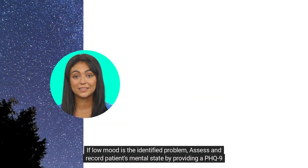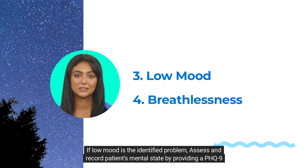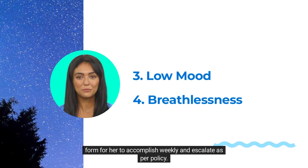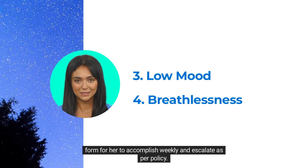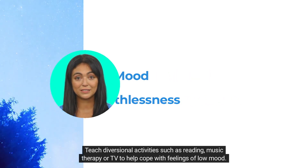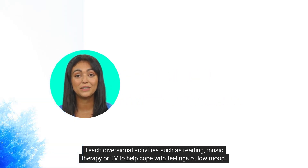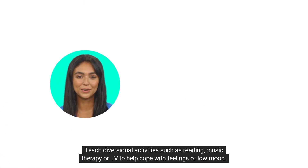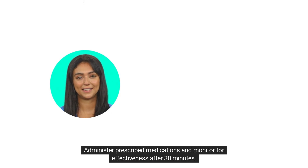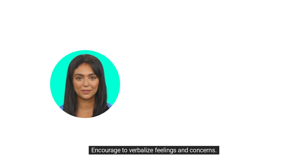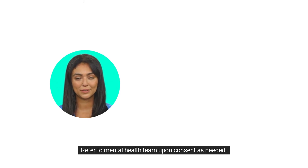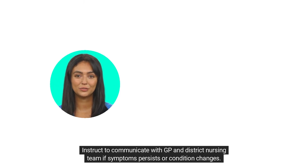If low mood is the identified problem, assess and record the patient's mental state by providing a PHQ-9 form to accomplish weekly and escalate as per policy. Teach diversional activities such as reading, music therapy, or TV to help cope with feelings of low mood. Provide a safe and calm environment. Administer prescribed medications and monitor for effectiveness after 30 minutes. Encourage verbalization of feelings and concerns. Refer to the mental health team upon consent as needed. Instruct to communicate with the GP and district nursing team if symptoms persist or condition changes.